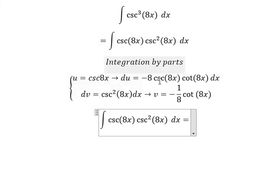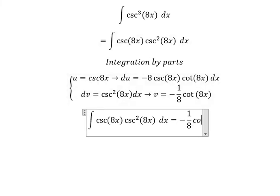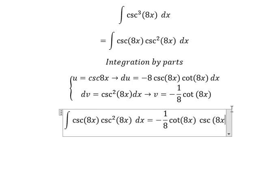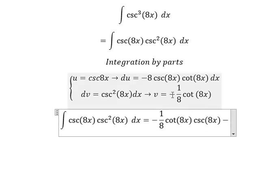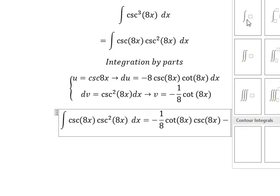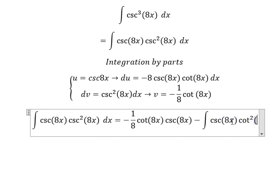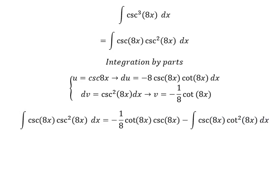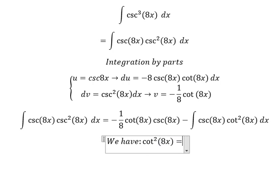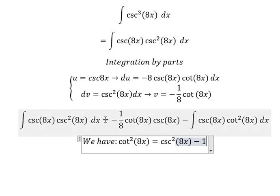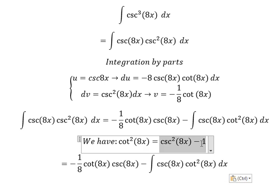So we have u multiplied by v: negative (1/a)·csc²(as), minus negative a multiplied by negative (1/a) — they cancel. So we have the integration of csc(as)·cot(as) ds. We use the formula: cot²(as) = csc²(as) − 1. Substituting this in here.